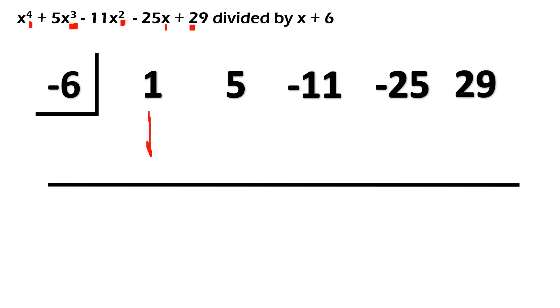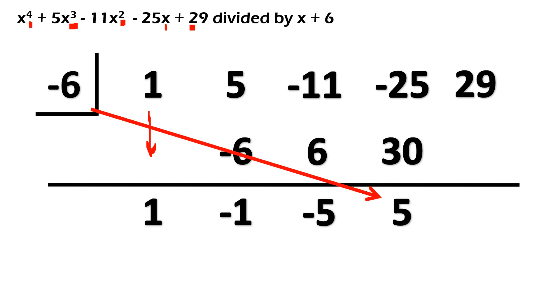Okay, so sunod na step is to bring down the leading numerical coefficient which is 1. Sunod, negative 6 times 1 is negative 6. Magkaiba sila ng sign. Subtract. Negative 1. Then multiply ulit. Negative 6 times negative 1 is positive 6. Magkaiba sila ng sign. Negative 11 plus 6. Subtract. Negative 6 times negative 5 is positive 30. And then magkaiba ulit si negative 25 at saka si 30 ng sign. Okay, so you need to subtract. Copy the sign of the bigger number. Positive 5. Then multiply ulit. Negative 6 times 5. That will give us negative 30. Then subtract ulit. 29 minus 30. That will give us negative 1.